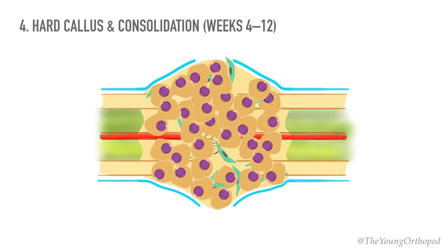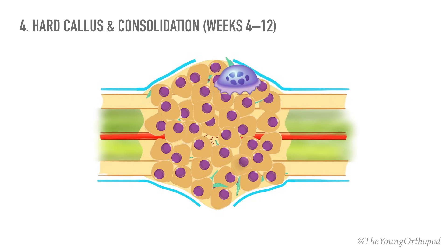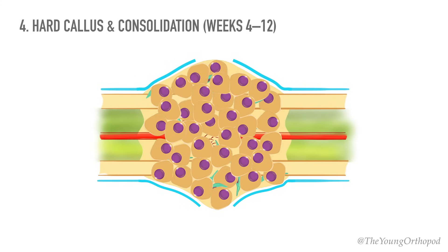As the immature fiber bone — or woven bone — becomes more densely mineralized, movement and strain at the fracture site decreases progressively. With continuing osteoclastic and osteoblastic activity, the woven bone is transformed into lamellar bone. The osteoclasts clean up the debris and the osteoblasts fill the gap with new bone.